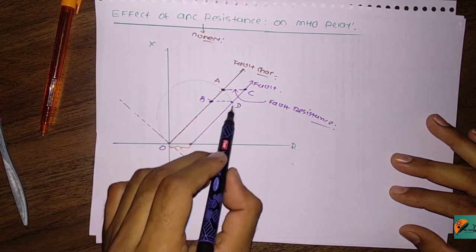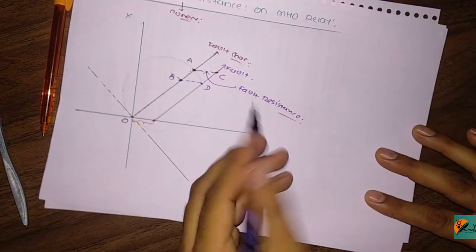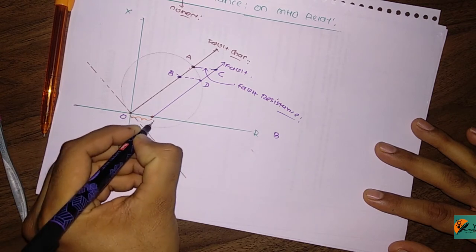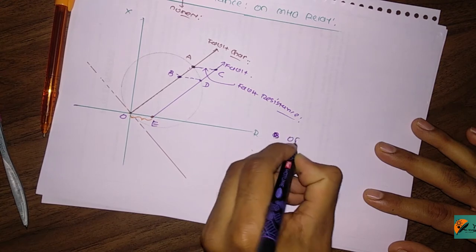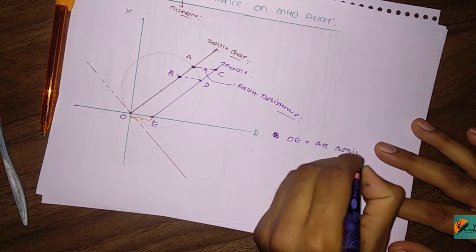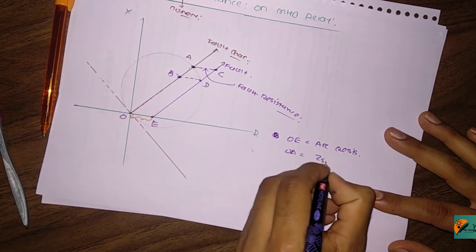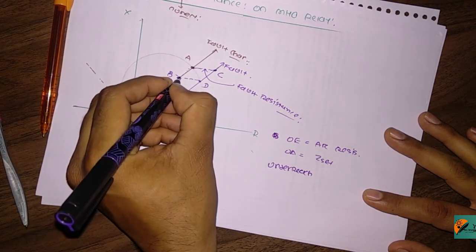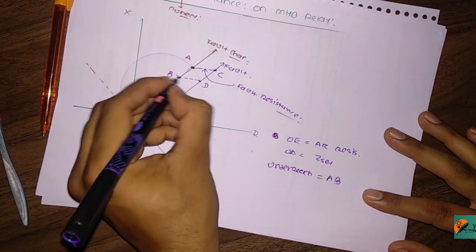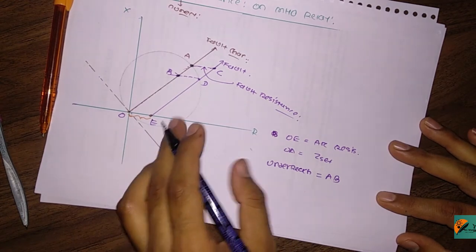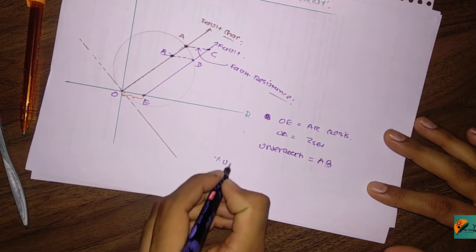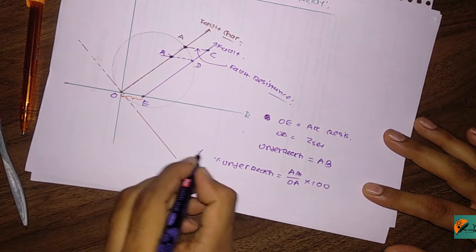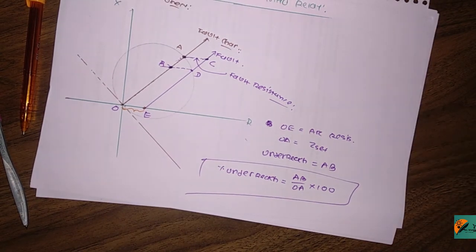So the relay can operate within this particular region only up to B. OE is the arc resistance, OA is your impedance set value. So the under-reach: previously it was operating up to OA, now it operates up to B. So AB is the under-reach portion. The percentage under-reach of the Mho relay is more than the impedance relay. The percentage of under-reach equals AB divided by OA multiplied by 100.